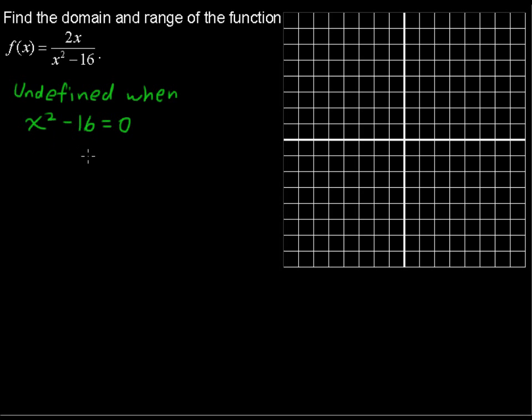Solving this, I could factor this, or what I'm going to do this time is just add 16 to each side and say x squared equals 16. And then I'll take the square root of each side, and when you take the square root to solve, you have to say plus or minus. So then we have x equals plus or minus 4.